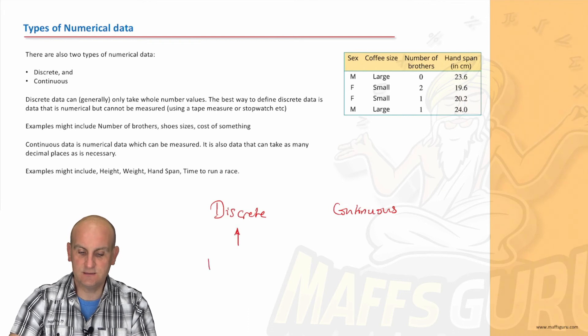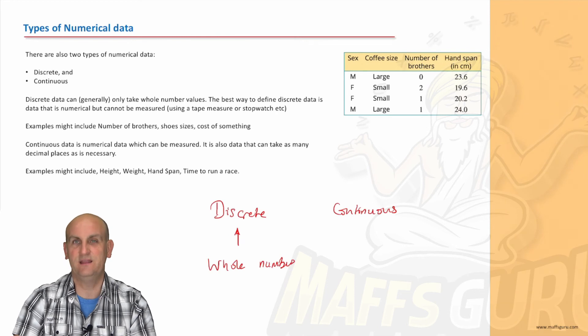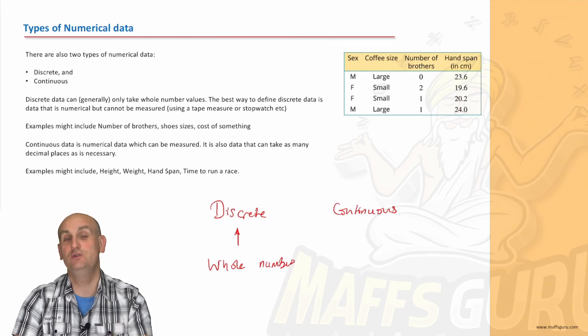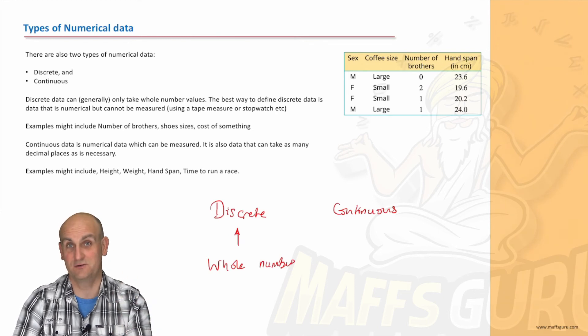But what is discrete data? Well, basically, discrete data takes whole number values. Now, again, I don't particularly like that because, believe it or not, shoe sizes are also discrete data. And you're going to say, well, hold on a moment. Shoe sizes have 7.5. They do.